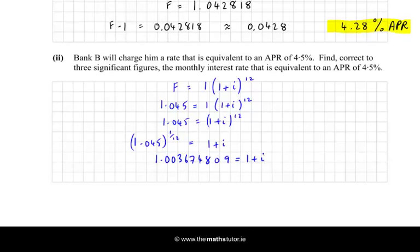So just subtract 1 from it and we get 0.0036748. And we want that again to three significant figures. So let's just lop off the 4809 and it will round down because 4 is less than 5. So we have our value of i as a decimal. So let's just write that as a percentage and it would be 0.367%.